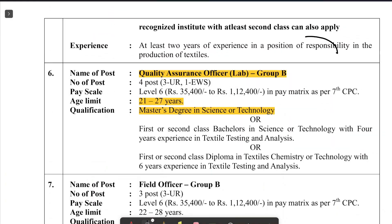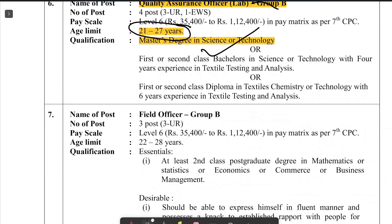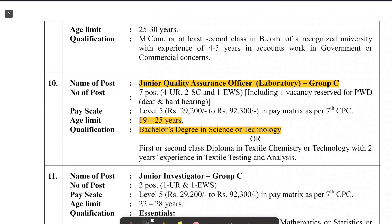The next post is Quality Assurance Officer Lab Group B. The age limit is 21 to 27 years and the qualification is MSc. The syllabus for these three posts is the same — MSc chemistry syllabus — which I will explain in detail.